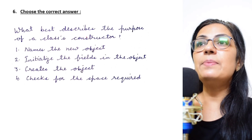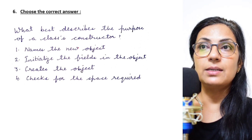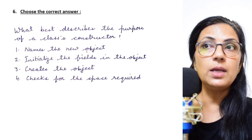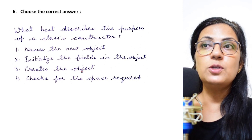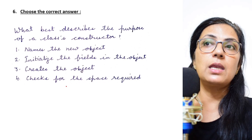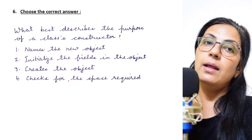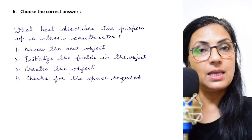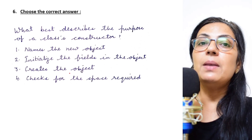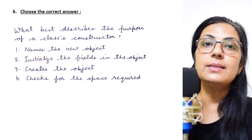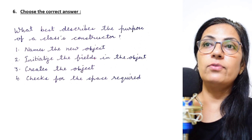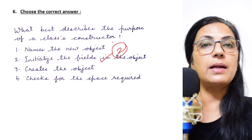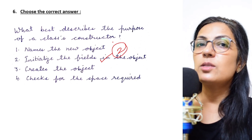Next question: what best describes the purpose of a class's constructor? The options are: it gives names to the new object, initializes the fields in the object, creates the object, or checks for the space required. The main purpose of a constructor is to initialize the instance variables or the fields of the object. So option two is the correct answer. Please practice these questions as much as you can.